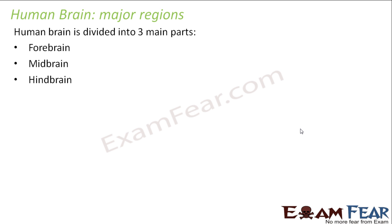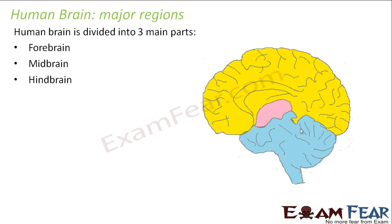These are the three major parts of the human brain. The brain is very complicated, so studying each and every corner was difficult. That is why classification was put into place. The brain was divided into three different parts, and then each part was studied in detail.